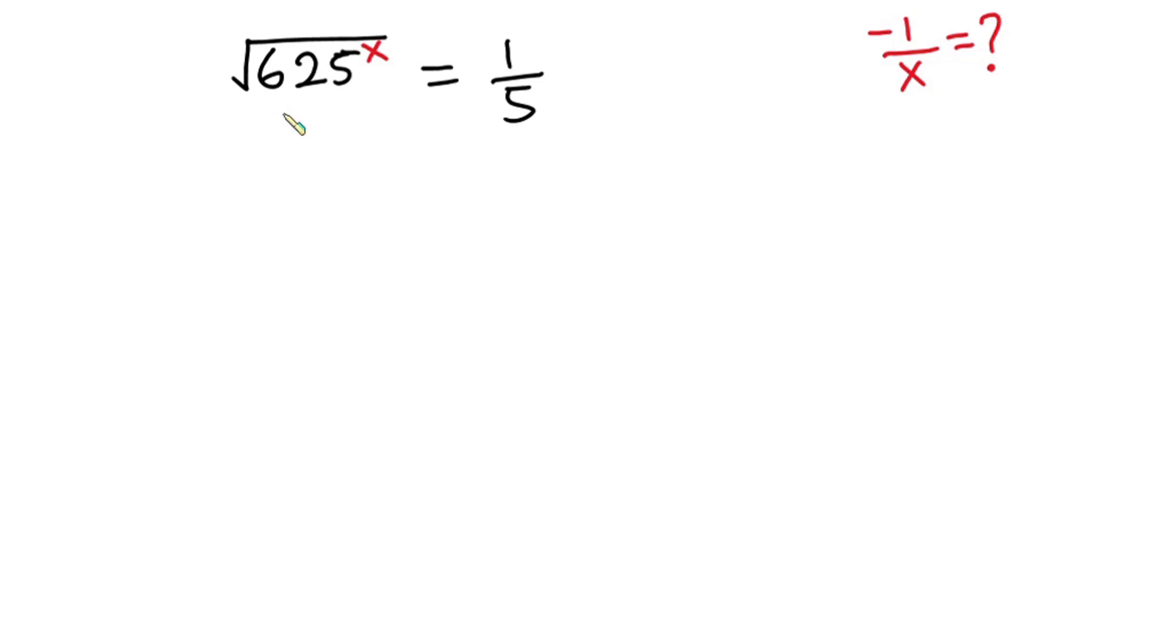Hello everyone, in this video we have this interesting problem. We have square root of 625 to the power x is equal to 1 over 5, and we have to find the value of negative 1 over x.